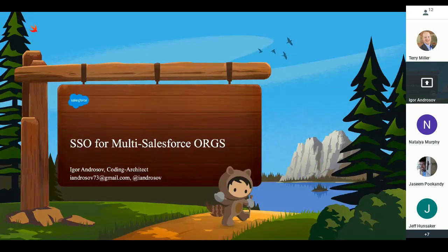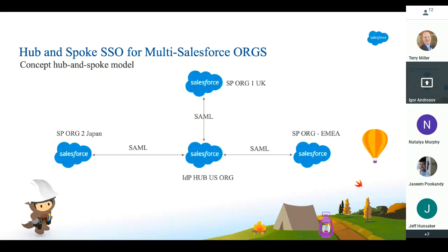The way to think of this is a hub and spoke. Conceptually, you would have one Salesforce organization work as a central IDP — we'd call it a hub — in this case maybe a US org or North America. Then you have all these other orgs connected as SSO service providers, so they'll be acting as SPs. Here I have three of them, but you could have many, many different orgs.